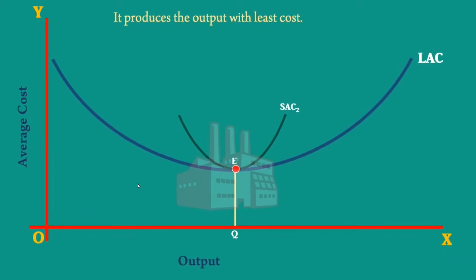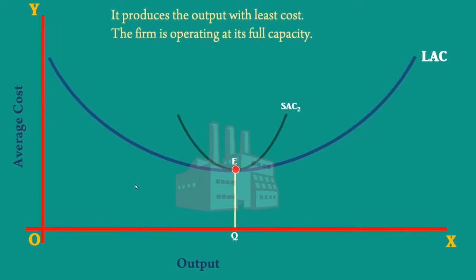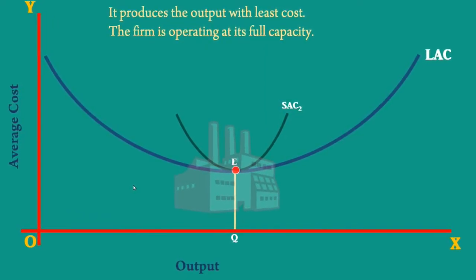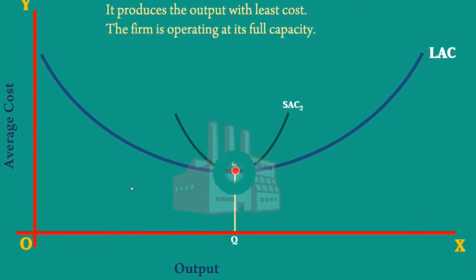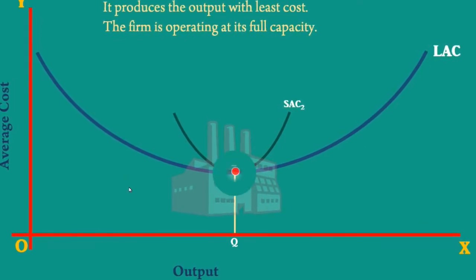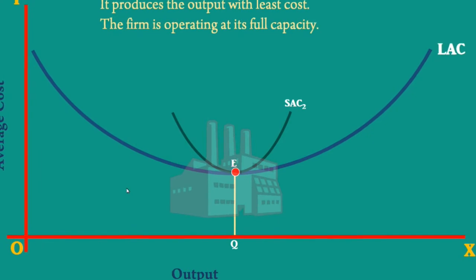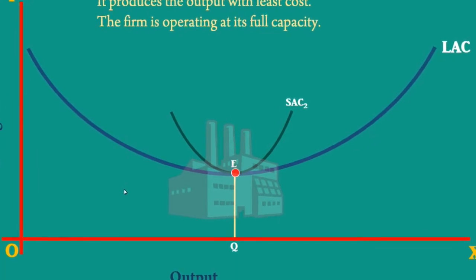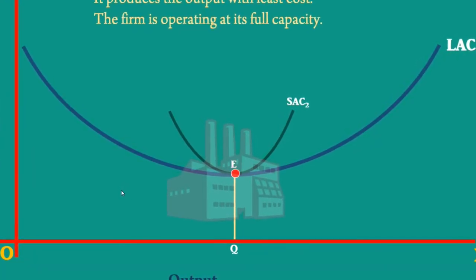Of all, the firm is operating at its full capacity. A firm is said to operate at its full capacity only when it operates at the minimum point of its average cost curve.